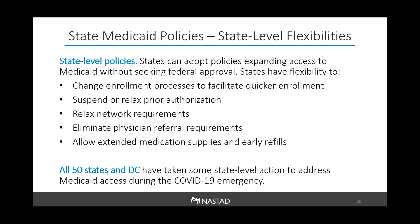The SPAs and waivers discussed so far all require federal approval before they can be implemented. However, states can adopt certain types of policies to expand Medicaid access during COVID-19 without seeking federal approval — for example, making changes to enrollment policies to facilitate quicker enrollment, relaxing prior authorization, relaxing in-network requirements for managed care enrollees, eliminating physician referral requirements, and allowing extended medication supplies and early refills. At least some state-level policies have been implemented in every state and DC.